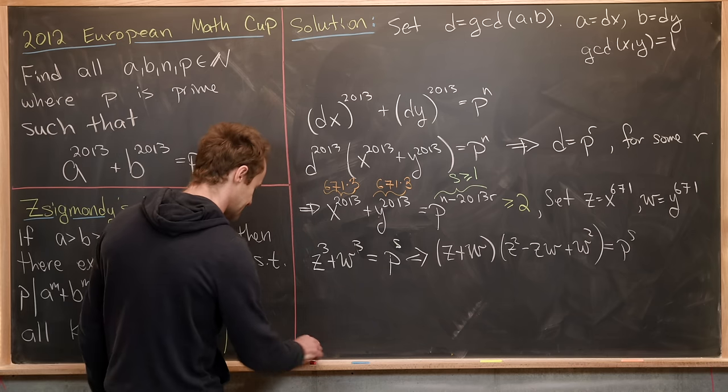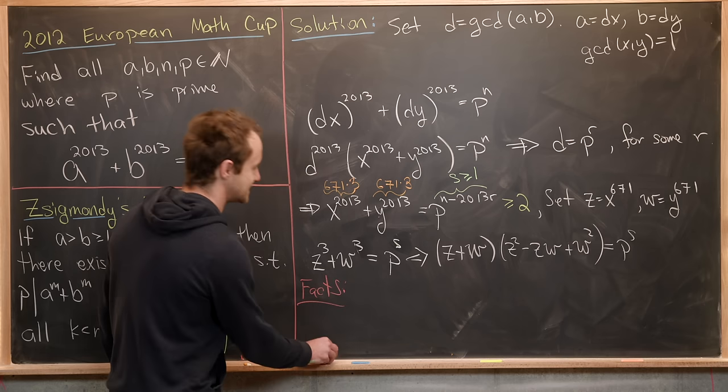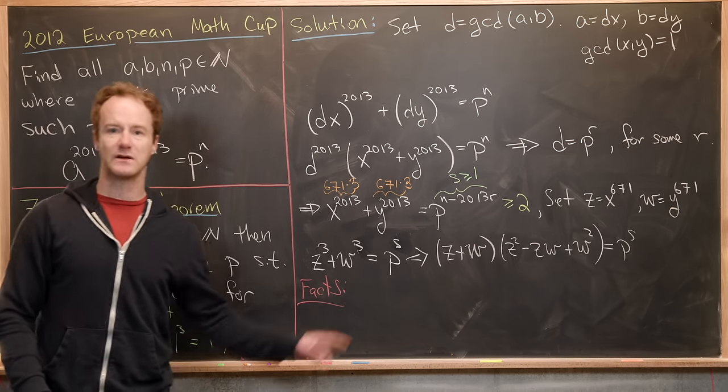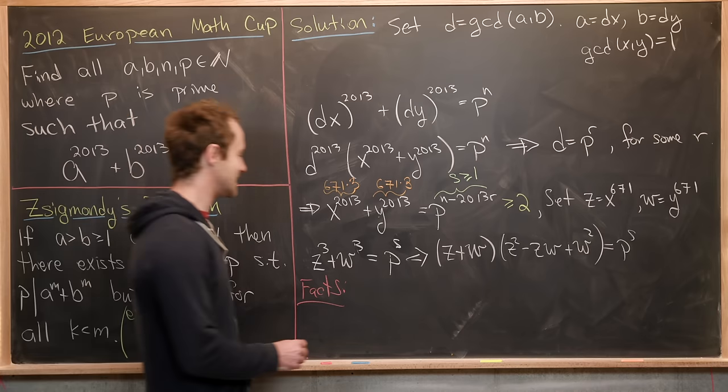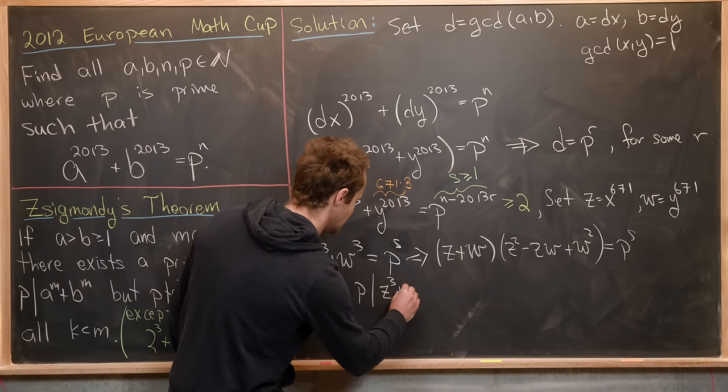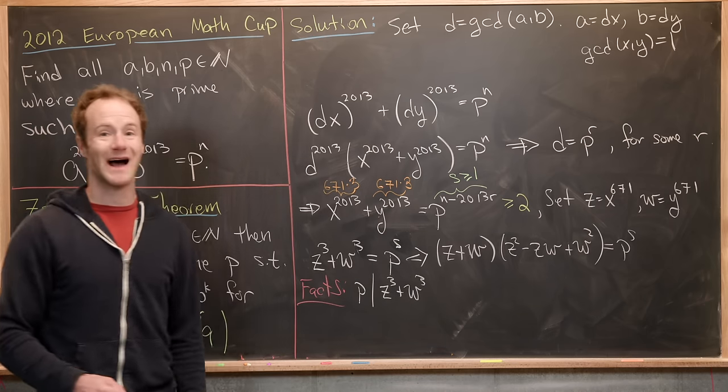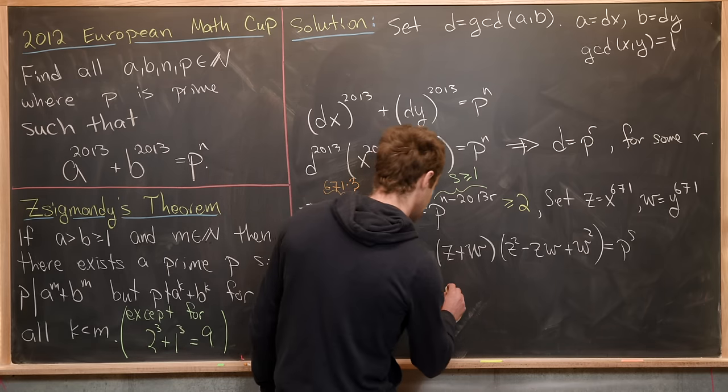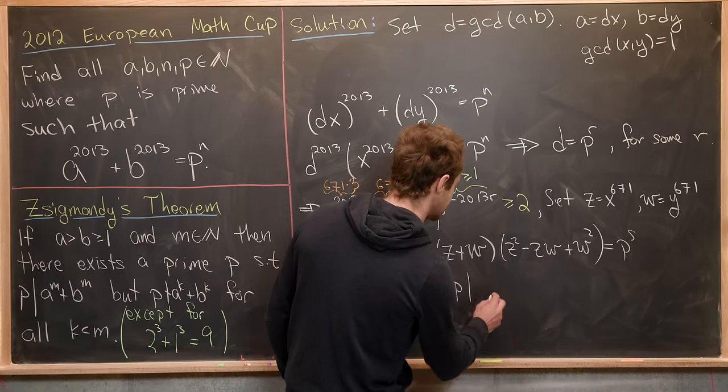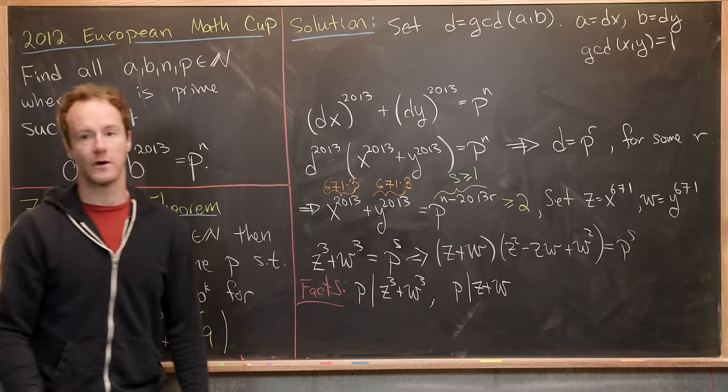So notice that gives us the following two facts, one of which is given, and then one of which is built out of this factorization. So the one that is given is that p divides z cubed plus w cubed. And then the one that we've gotten out of this factorization is that p divides z plus w. Okay, great.